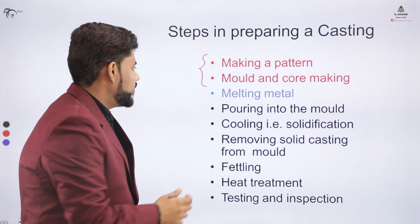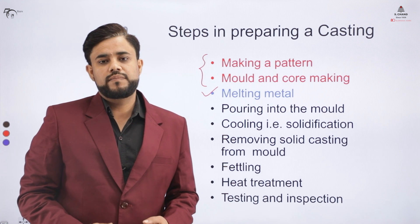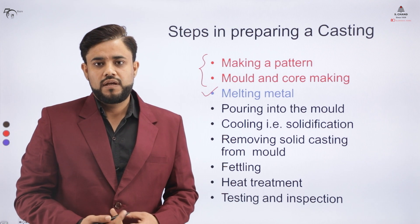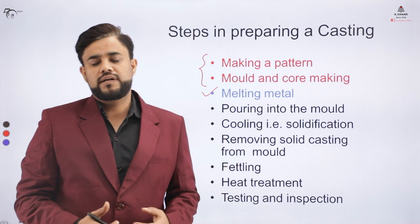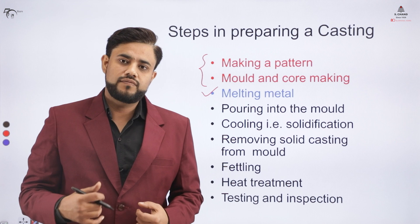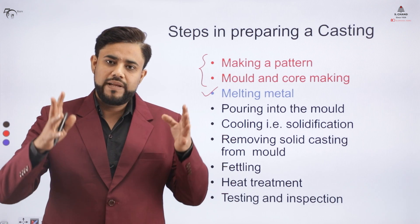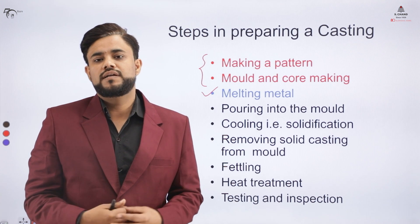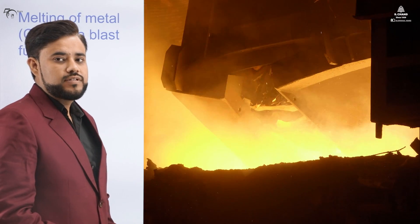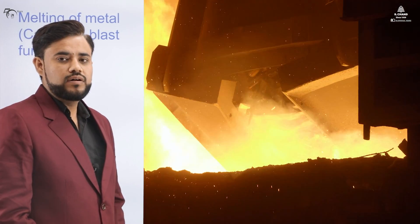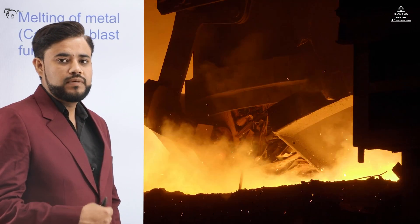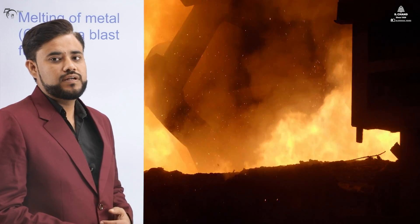In this part of the video, we will be covering the melting process. The melting process is majorly used to melt the metal before pouring it into the mold cavity. We have specific types of furnaces to melt the metal. For example, we have a blast furnace, which is generally coal-fired, and all the scrap material is placed inside the crucible where the metal is melted.